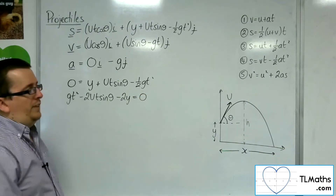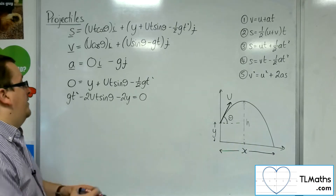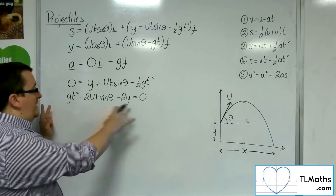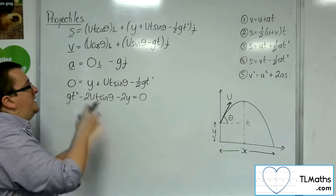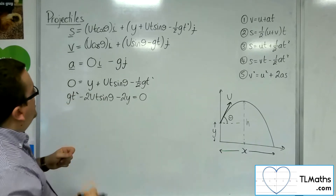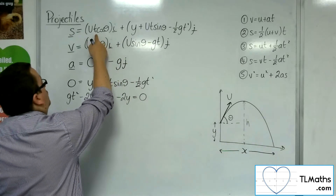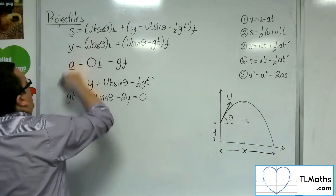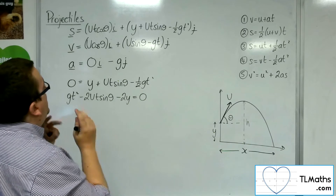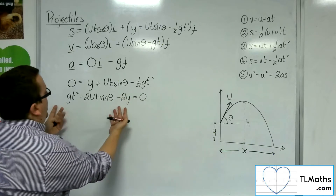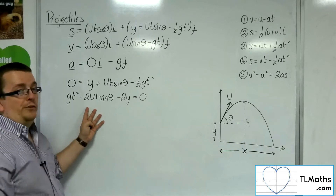So this is the equation that I have. Now I want to eliminate t — this is a quadratic in t. So if I can solve this quadratic equation to get t equals something, I can then substitute it into the horizontal position in order to get my x equals. x equals u times t — the solution to this equation — times cos theta.